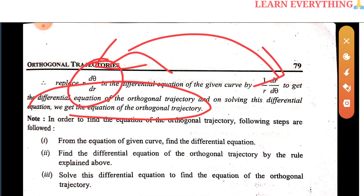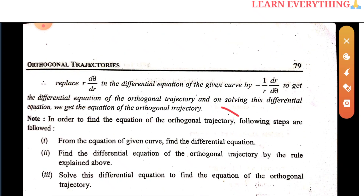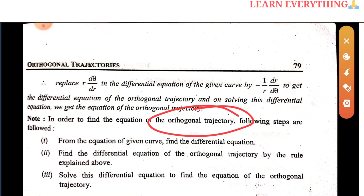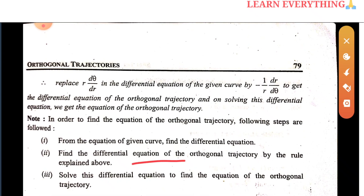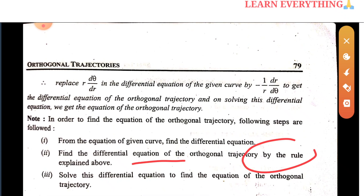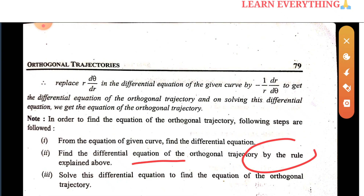To summarize the steps to find the equation of the orthogonal trajectory: Step 1 - from the equation of the given curve, find the differential equation. Step 2 - find the differential equation of the orthogonal trajectory by the rule: replace dy/dx with -dx/dy (Cartesian) or replace r·dθ/dr with -(1/r)·dr/dθ (polar). Step 3 - solve this differential equation to find the equation of the orthogonal trajectory.